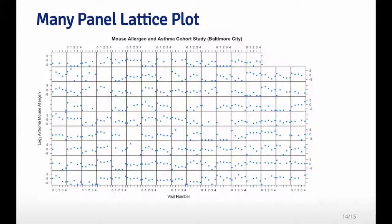It may be useful to follow up on those subjects to see why is it this subject only have four values or three values. You can see that some subjects have a lot of variation, so they go up and down a lot between visits. And some have almost no variation at all, that every visit is the same level of mouse allergen.